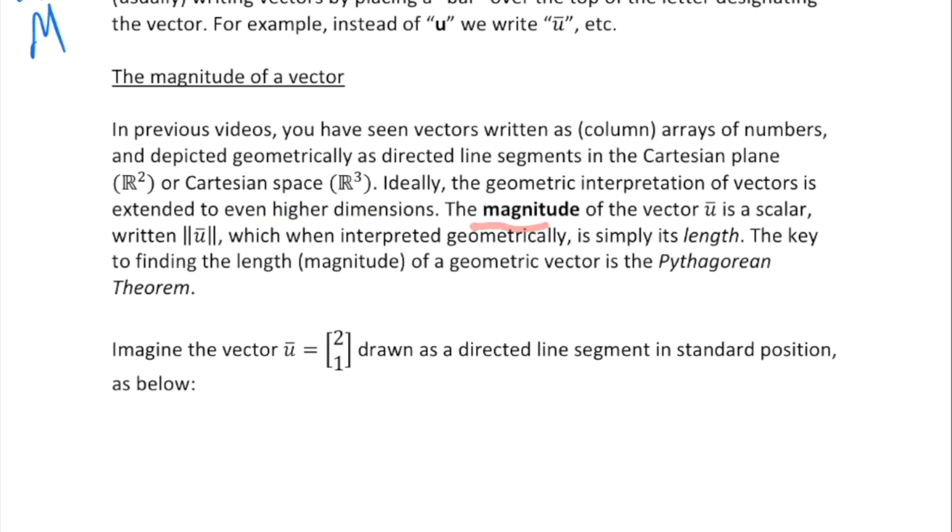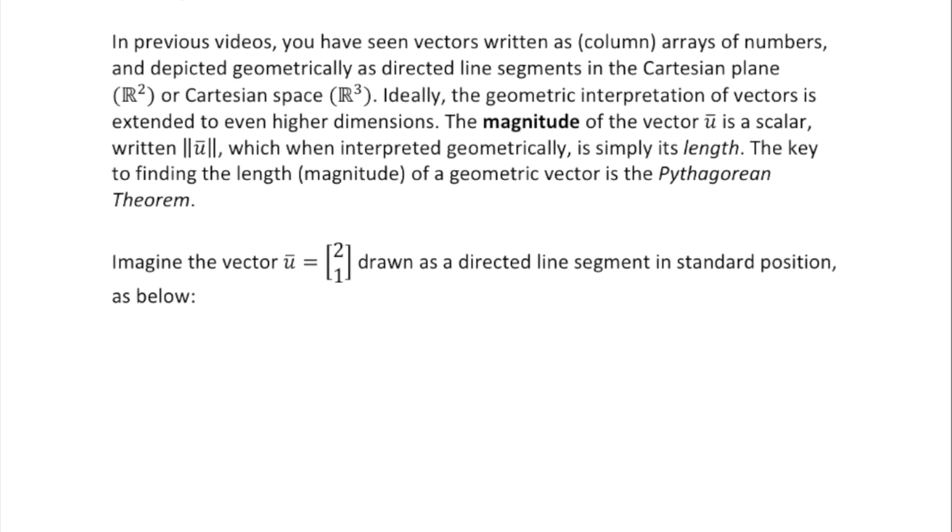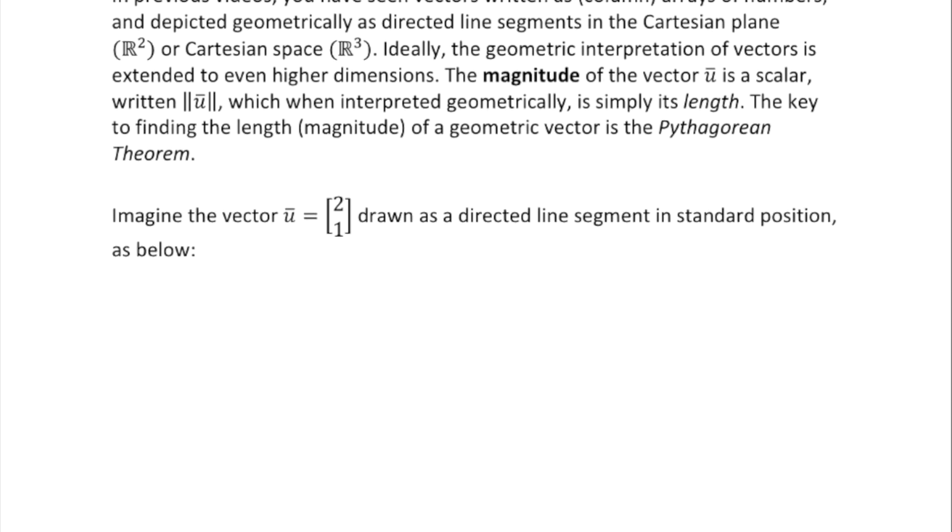The magnitude of a vector is a scalar associated with the vector, and we use this double bar notation for the magnitude of a vector. Interpreted geometrically, it's simply the length of the geometric vector. The key to finding the length or magnitude of a geometric vector is the Pythagorean theorem.